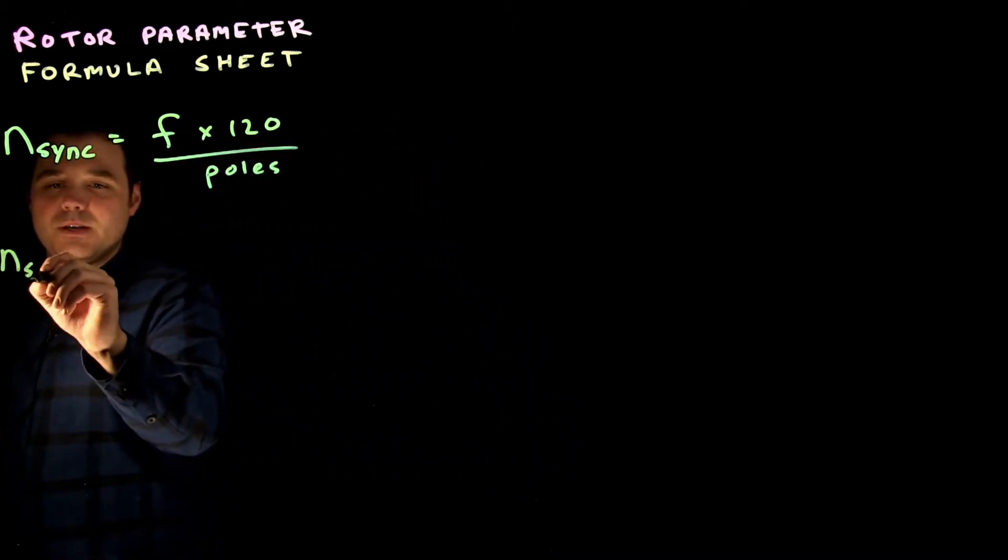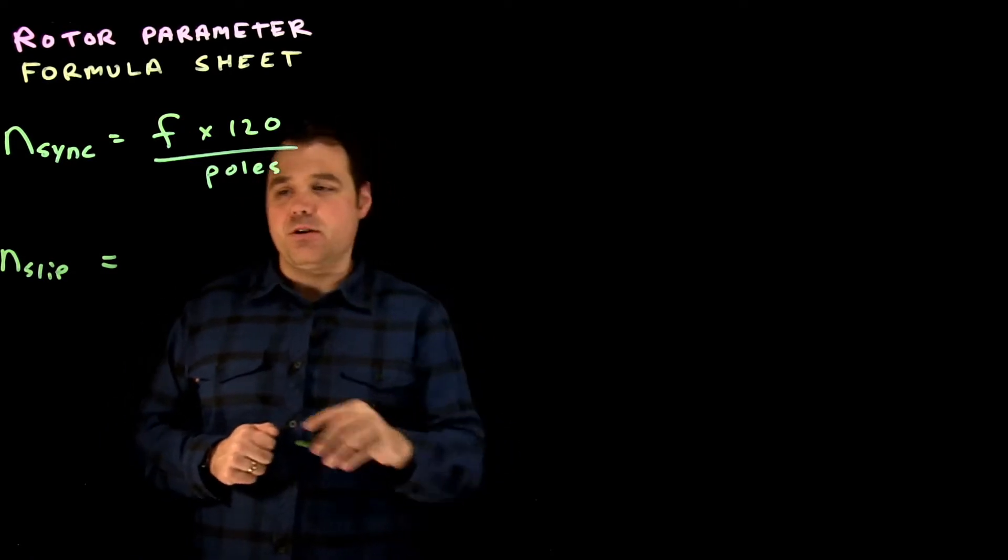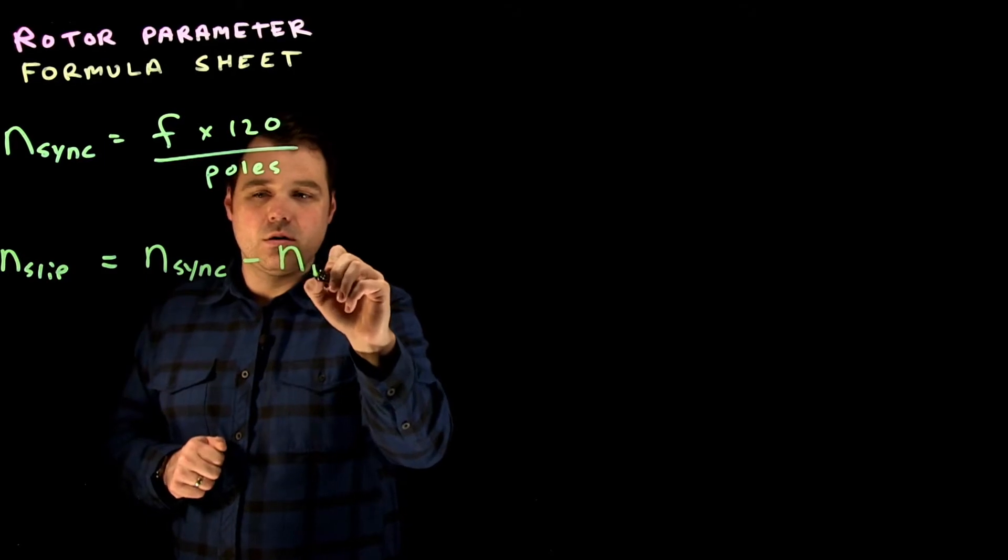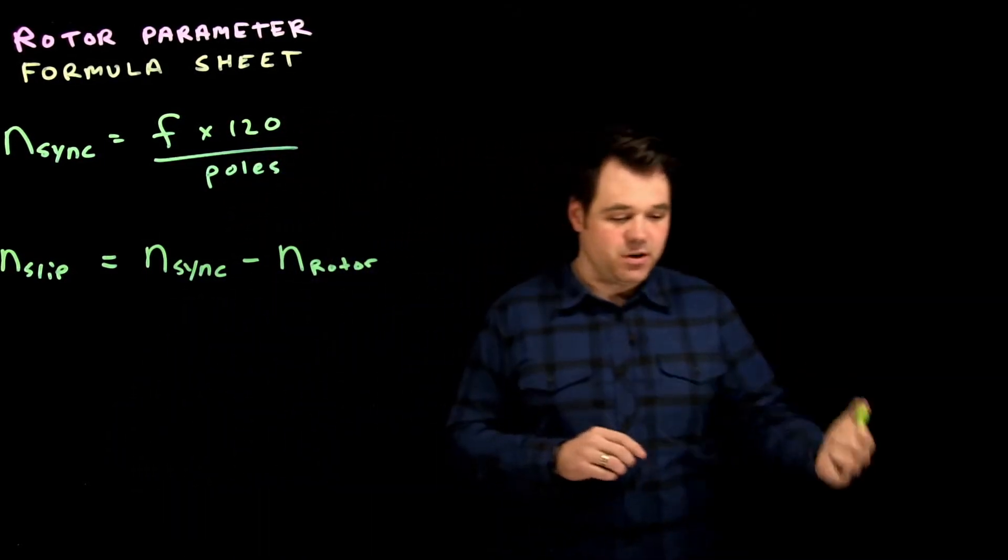Then we get our slip speed, right? With slip speed, what we're going to do is take our sync speed and we are going to minus our rotor speed. And that's going to give us the difference between our synchronous speed and our rotor speed.